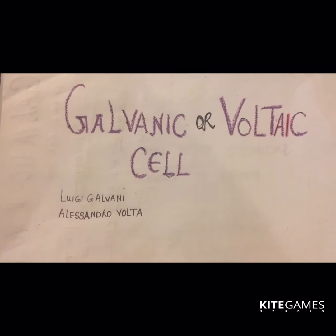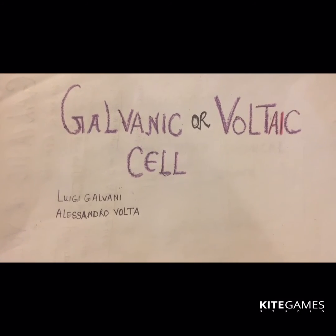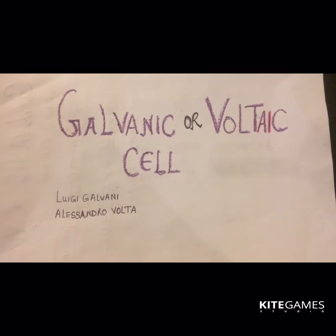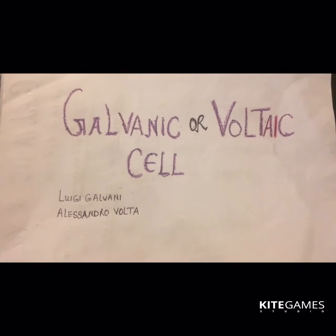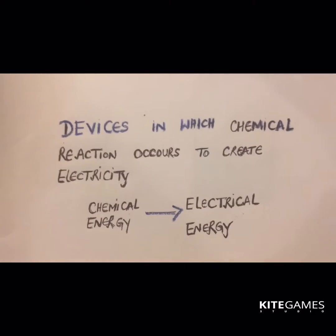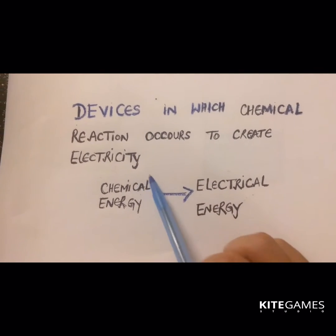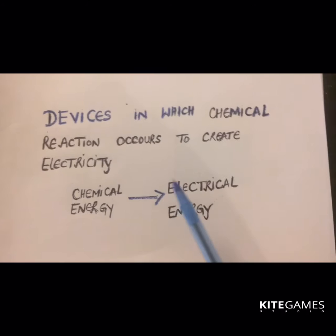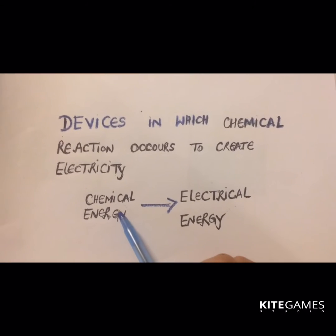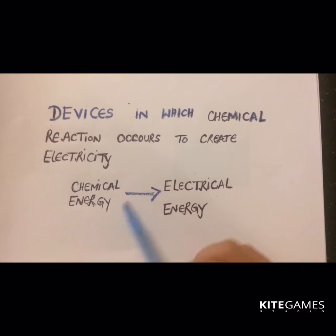Hello friends, today our topic is the galvanic or voltaic cell. The name is named after the scientists Luigi Galvani and Alessandro Volta. Galvanic or voltaic cells are devices in which a chemical reaction takes place to create electricity — it is a device which converts chemical energy into electrical energy, where that chemical energy is formed due to a chemical reaction.